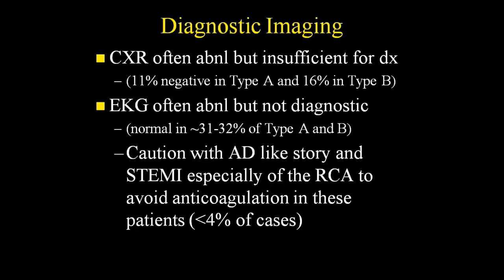The chest X-ray can be abnormal but doesn't give you a lot of information on its own. In Type A dissection, about 1 in 10 had a normal-looking chest X-ray. The EKG can be abnormal given underlying hypertension, but it doesn't tell you everything. It's similar to pulmonary embolism — you see sinus tachycardia and the EKG is relatively unremarkable. If the EKG looks pretty normal and the story doesn't fit, think about dissection.